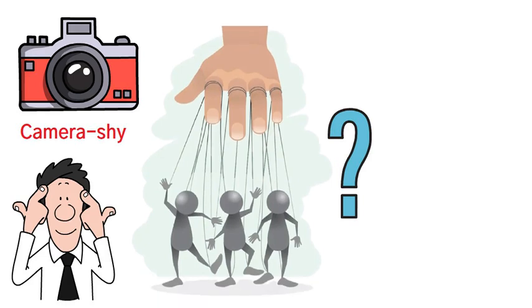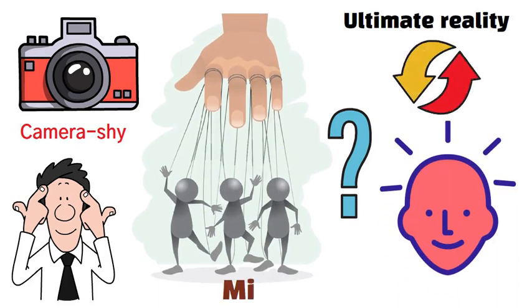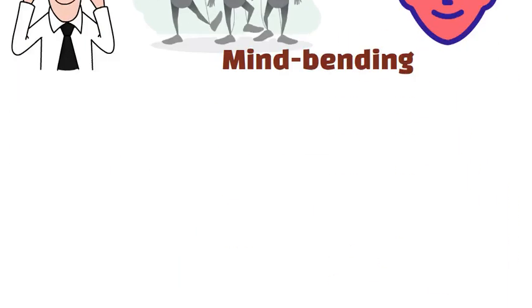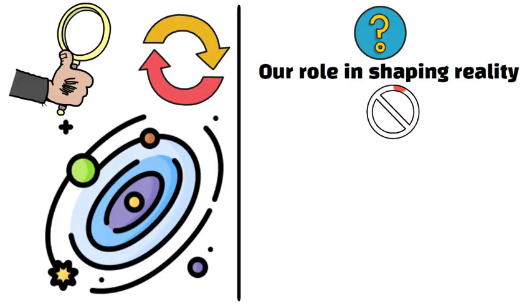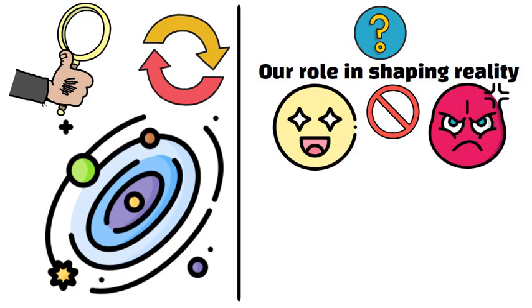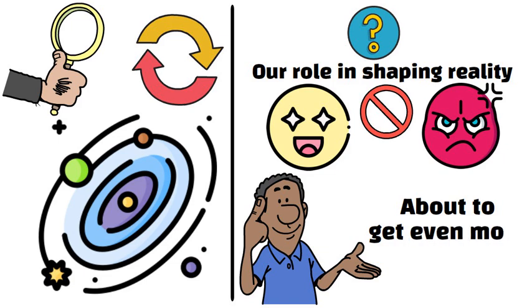Are we just puppeteers of a universe that dances to our attention? Or is consciousness the ultimate reality changer? The implications are mind-bending. If simply observing can alter the universe, what does that say about our role in shaping reality? It's no wonder this idea is both fascinating and infuriating. Hold on to your brain cells, because this exploration of the cosmos is about to get even more twisted.